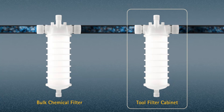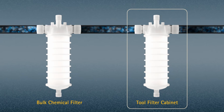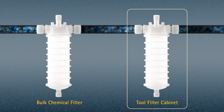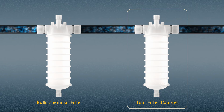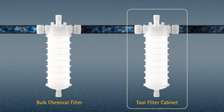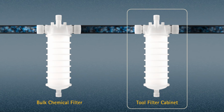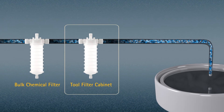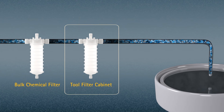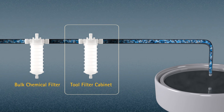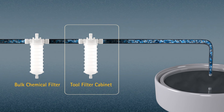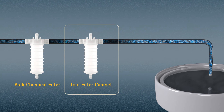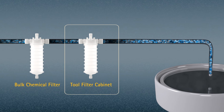After the chemistry leaves the filter, it picks up contaminants on its way to the wafer from various sources, including tubing and valves. Next generation processes are sensitive to these particles and result in defectivity and yield loss.